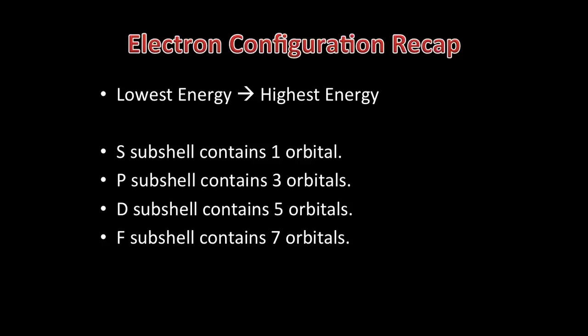The S subshell, which is spherical, contains only one orbital. The P subshell, which contains three orbitals, can contain up to six electrons, and each orbital is dumbbell shaped. The D subshell contains five orbitals and so can contain up to ten electrons. And finally, the F subshell has seven orbitals, which can each hold up to 14 electrons.